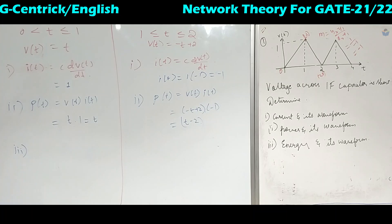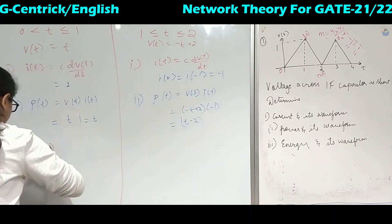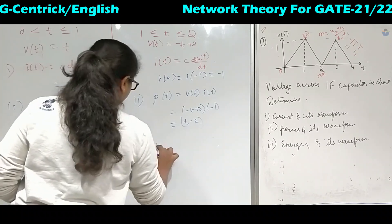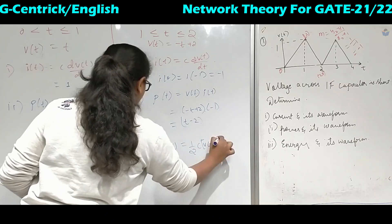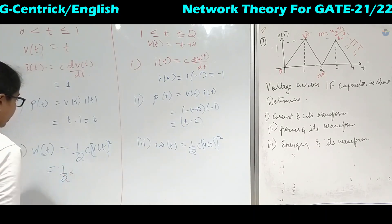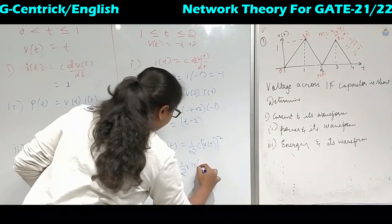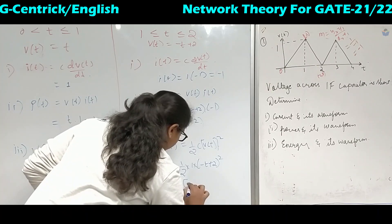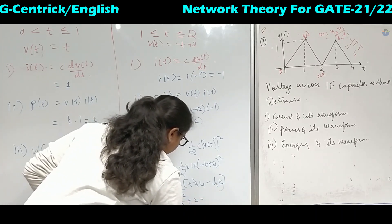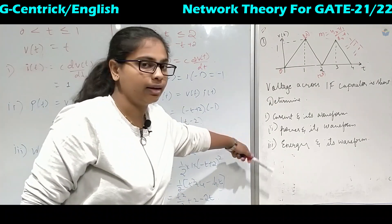For energy stored, the formula is W(t) equals half C V squared. From 0 to 1: half times 1 times t squared gives t squared by 2. From 1 to 2: half times 1 times (minus t plus 2) squared gives half of (t squared plus 4 minus 4t), which simplifies to t squared by 2 plus 2 minus 2t. We now have the values for current, power, and energy.